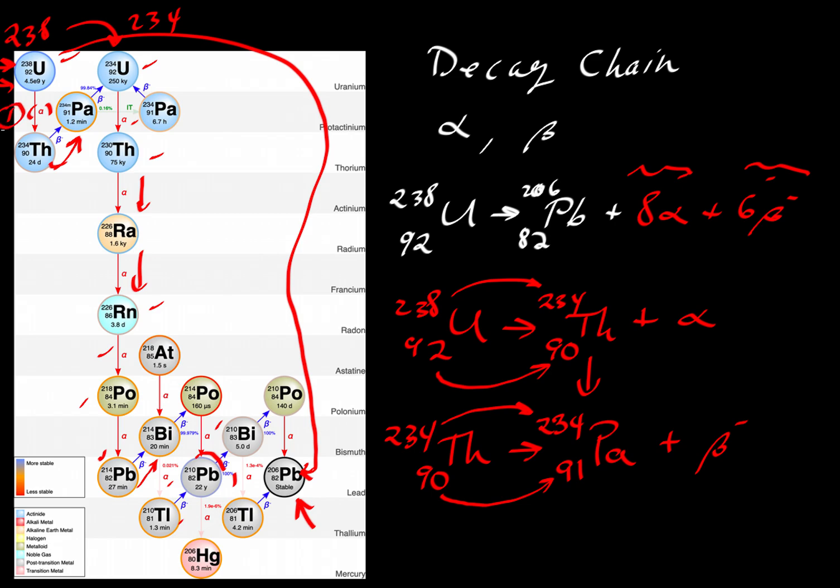Here's one alpha decay here. We'll just count the alphas. Here's a second there, a third, a fourth, a fifth, a sixth. We're going to go through some beta decays.